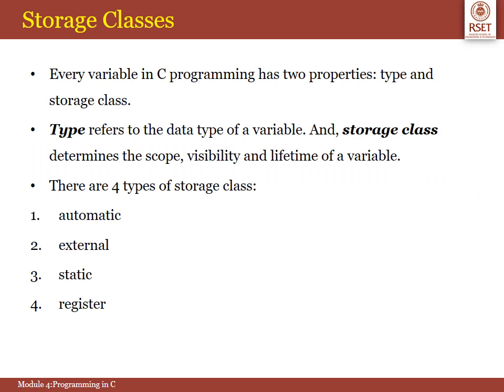When we talk about storage classes, we need to know about the variables used in our program. Every variable has two properties: the type and storage class. The type refers to its data type, and storage class tells the compiler about the storage area of a variable, the initial value of a variable, and the scope and lifetime of a variable. Based on these, the storage class has four types: automatic, external, static and register.